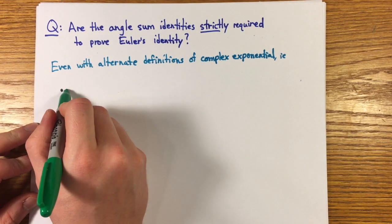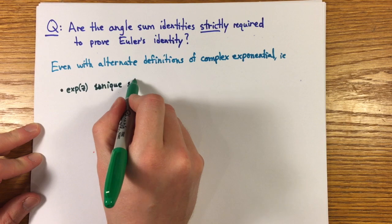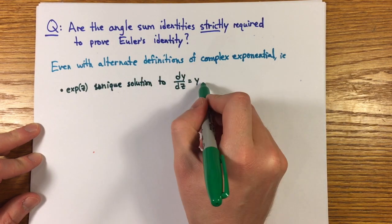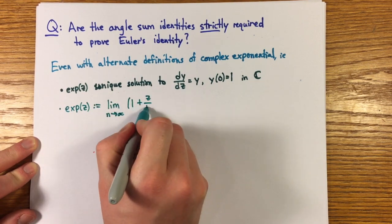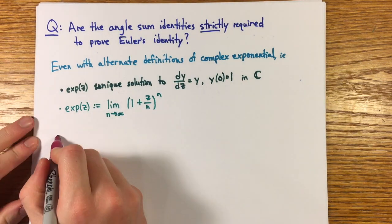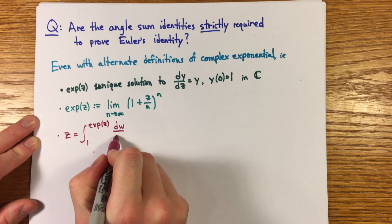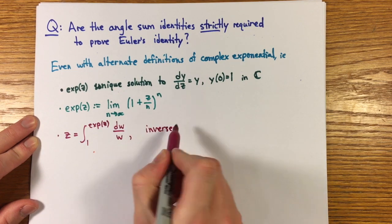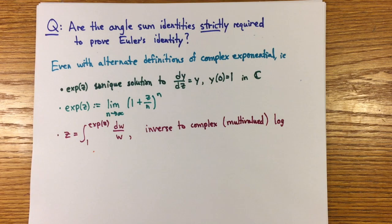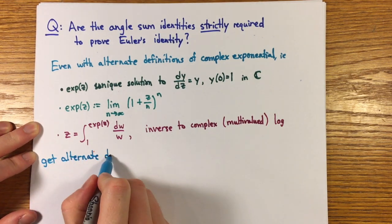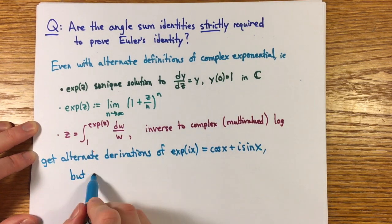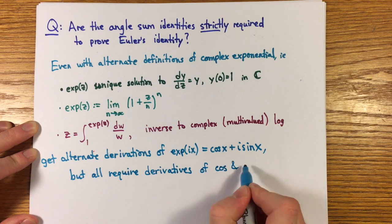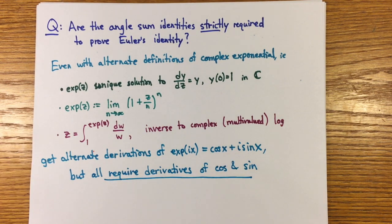There are other ways to define the complex exponential, either as the solution in C of its differential equation or as the limit that defines continuously compounded interest, or you can even try defining it as the inverse to the multi-valued complex logarithm. All these definitions require more difficult theory to establish the properties of the exponential. And in all cases, you'll need the derivatives of sine and cosine to establish Euler's identity. And the way we define sine and cosine, you need the angle sum identities to compute the derivatives.